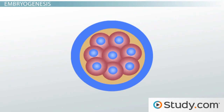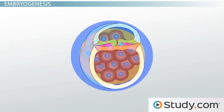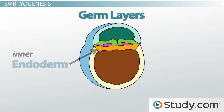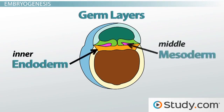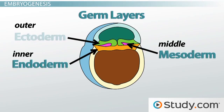Then, over time, that tiny little ball of cells organized itself into different layers called germ layers. You may remember from previous lessons that you have three of these layers: an inner endoderm, a middle mesoderm, and an outer ectoderm. Did you know that all of the organs and tissues in your body come from one of these three layers?